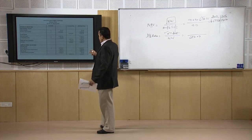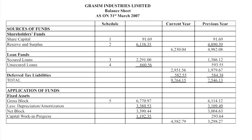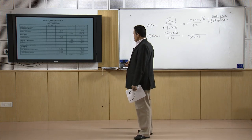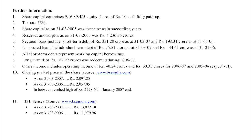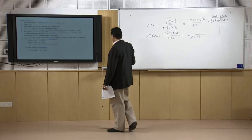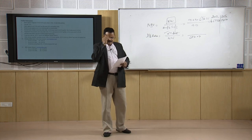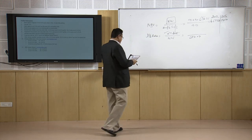If you go to the balance sheet, you find the figure of unsecured loans which is 2,291 crores in the case of 2007, and unsecured loans are 660.56 crores. This is the total loans figure. But in the additional information you find that secured loans include short-term debt of 331.20 crores, and unsecured loans include short-term debt of 75.51 crores for 2007. For the previous year, the secured loans short-term component is 198.31 crores and the unsecured loan short-term component is 144.61 crores. So we need to calculate the real figure of long-term debt.